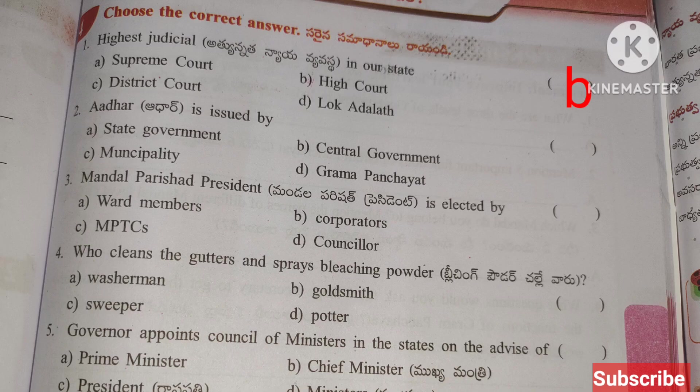Use the correct answer. First: Highest judicial body in our state — answer is B: High Court. Second: Aadhaar is issued by — answer is B: Central Government. Third: Mandal Parishad President is elected by — answer is C: MPTCs. Who cleans the gutters and sprays bleaching powder? Answer is C: Sweeper.